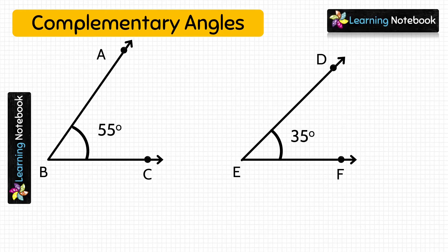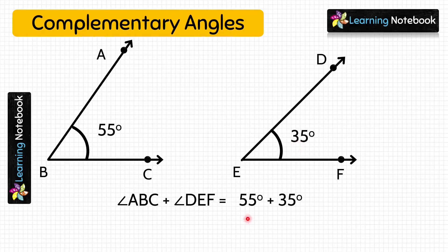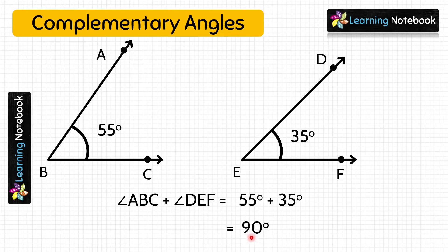Now, if we add the measure of both these angles, that is 55 degrees plus 35 degrees, we get 90 degrees. So this means both these angles are Complementary Angles, because the sum of their measures is 90 degrees. Also, we can say that both the angles are Complementary Angles of each other.